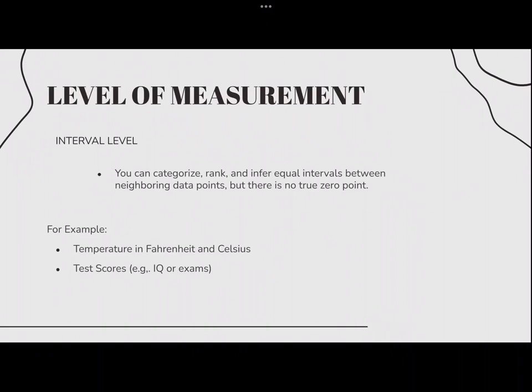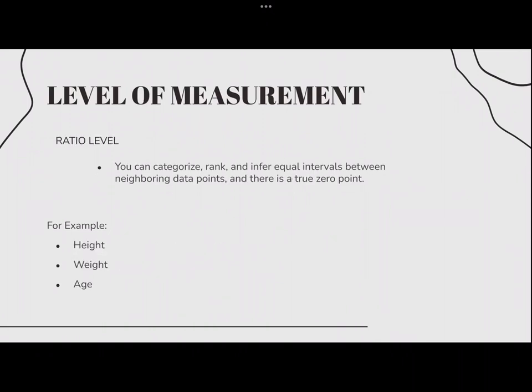Then we have the interval level, where you can categorize, rank, and infer equal intervals between neighboring data points, but there is no true zero point. For example, temperature in Fahrenheit and Celsius, and test scores such as IQ or exams. Last but not the least in the levels of measurement, we have the ratio level, where you can categorize, rank, and infer equal intervals between neighboring data points, and there is a true zero point. For example, height, weight, and age.